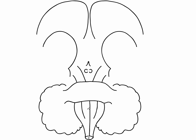Here we can see the medulla. We've got the midline, and then we've got a pyramid either side of the midline, and then an olive either side of each of the pyramids — so: olive, pyramid, pyramid, olive.